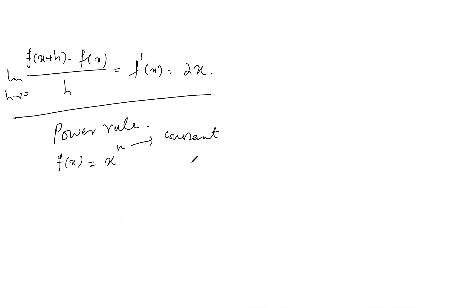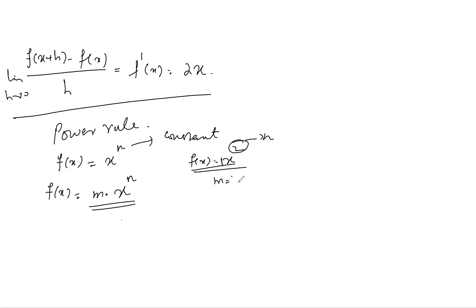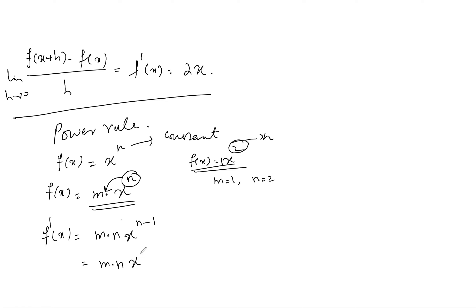In the previous example, n was 2. In general form, we write f(x) = m·x^n, where m is the coefficient. The derivative f'(x), by the power rule, is found by multiplying the power n with the coefficient m of the base, giving m·n·x^(n-1) — we subtract 1 from the power. That is the derivative.